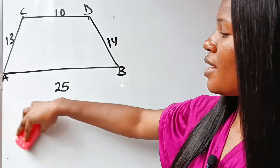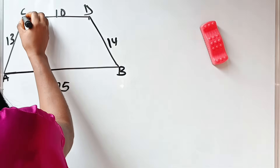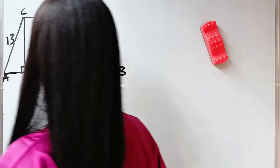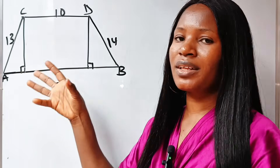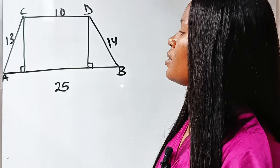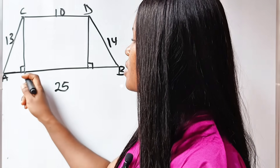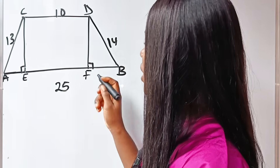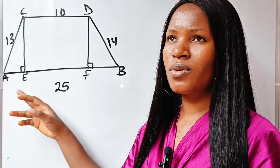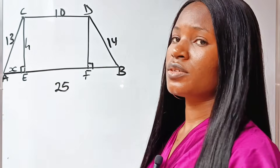It's actually very easy. Let's bring out the height. From here to here is the height, and because it is the height, it makes 90 degrees with the horizontal line. Now let's label the points: we have A, B, C, D, and let's call this point E and this point F. Let's call AE as X and our height H.